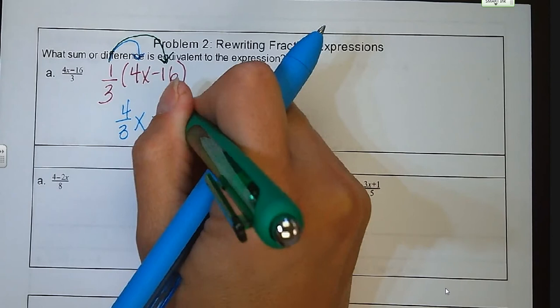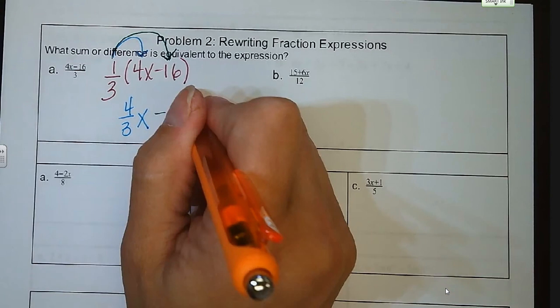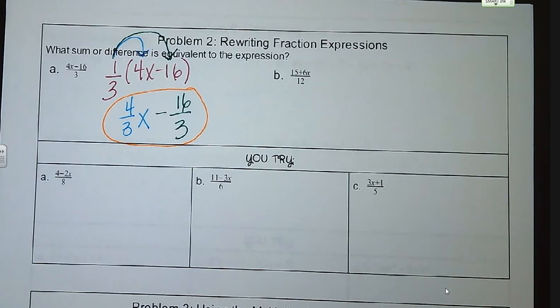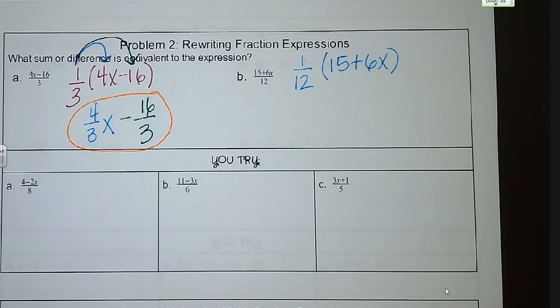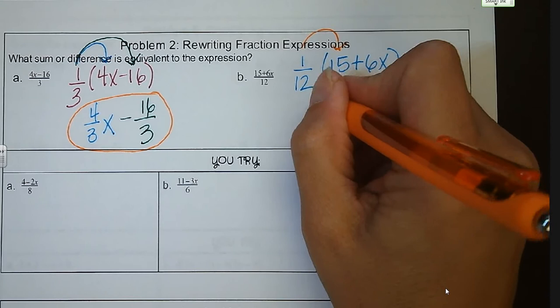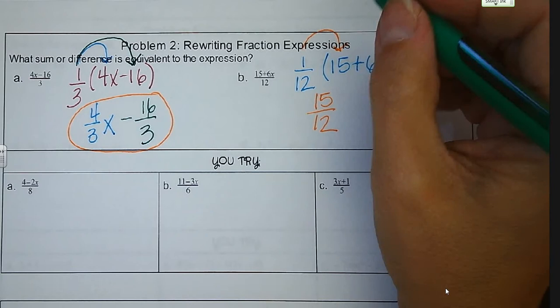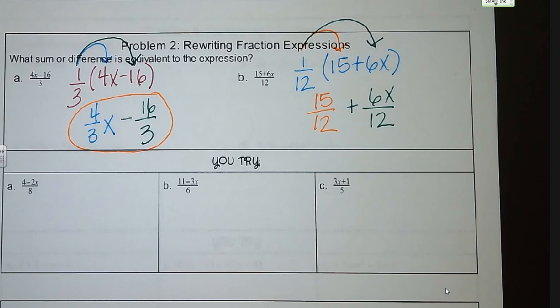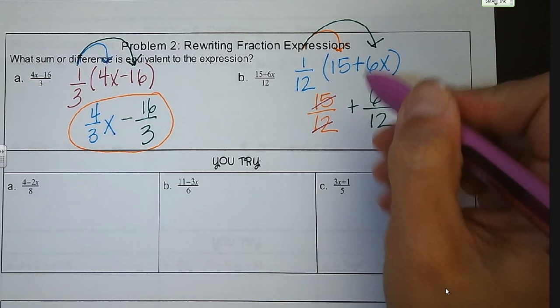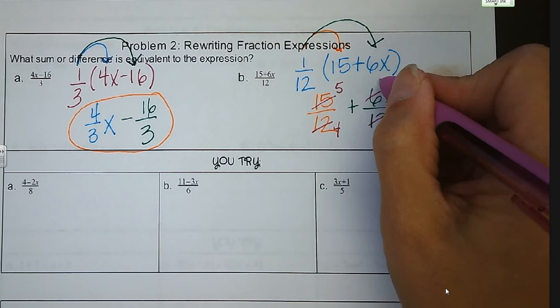For letter B, we can bring out a 1 twelfth and use that as our distribution. So we have 15 plus 6X. When we distribute, 15 times 1 twelfth is 15 twelfths, and we are adding 6X over 12. We can reduce these fractions: 15 over 12 reduces to 5 over 4, and 6 over 12 reduces to 1 half. So we rewrite that neatly as 5 fourths plus 1 half X.